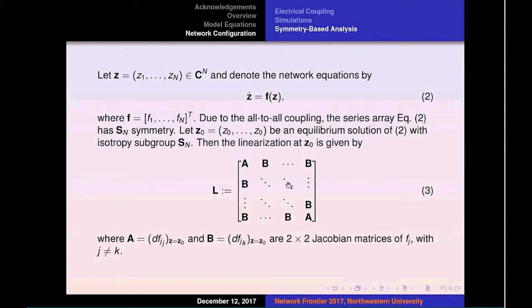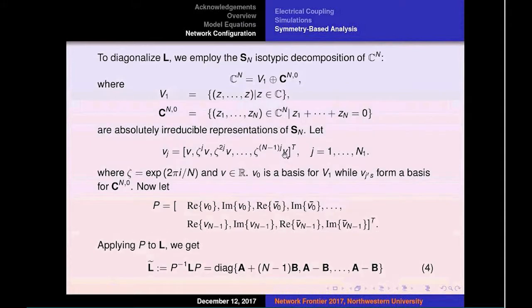We compute the linearization of the entire network dynamics where we have the standard blocks A and B that come from the internal dynamics and all the coupling that occurs from node 2 to node 1, node 3, and so on.